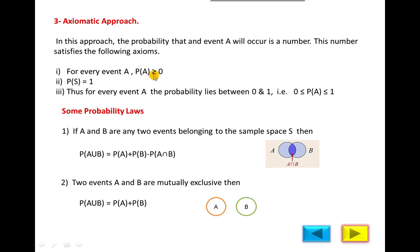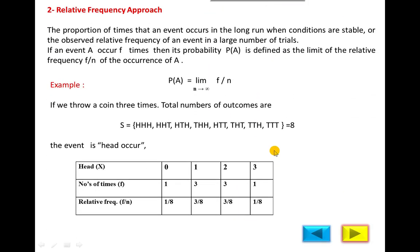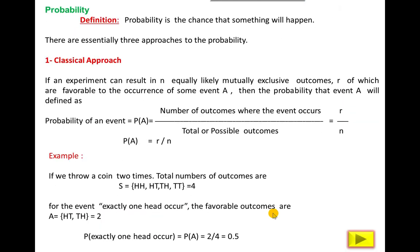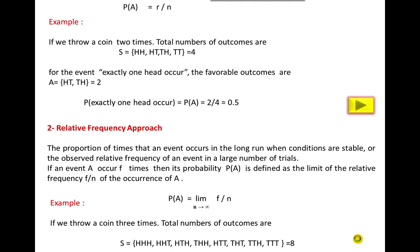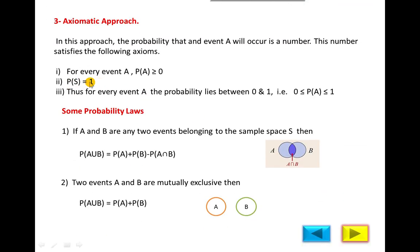The axioms are: First, for every event A, P(A) ≥ 0. Second, the probability of the sample space S equals 1 always. In the previous example with eight outcomes, each outcome has probability 1/8, and adding 1/8 eight times gives 8/8 = 1. In the coin-toss example with four outcomes, each has probability 1/4, and 4 × (1/4) = 1. So the probability of the sample space is always 1, and for every event A, probability lies between 0 and 1.